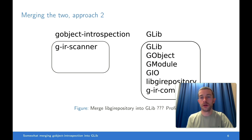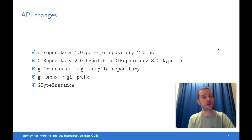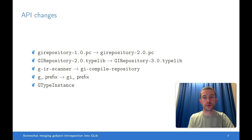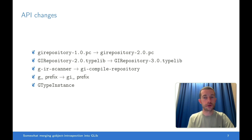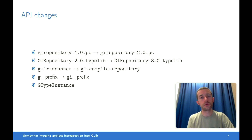So approach two — this is the approach we actually took. It's basically to merge half of GObject Introspection into GLib. We move libgirepository and the GIR Compiler into GLib, but the GIR Scanner stays in the GObject Introspection project. This means we've essentially split the introspection pipeline into the parts which generate GIR files, which stay in GObject Introspection, and the parts which consume the GIR files, which have moved into GLib and will then generate and read the typelib files.